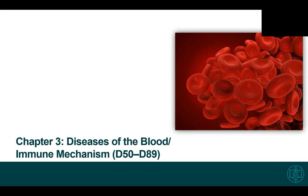Hi everyone. Welcome back to week six of our AAPC CIC curriculum. We're going to go over chapter three, diseases of the blood and immune mechanism, and that is code range D50 to D89.